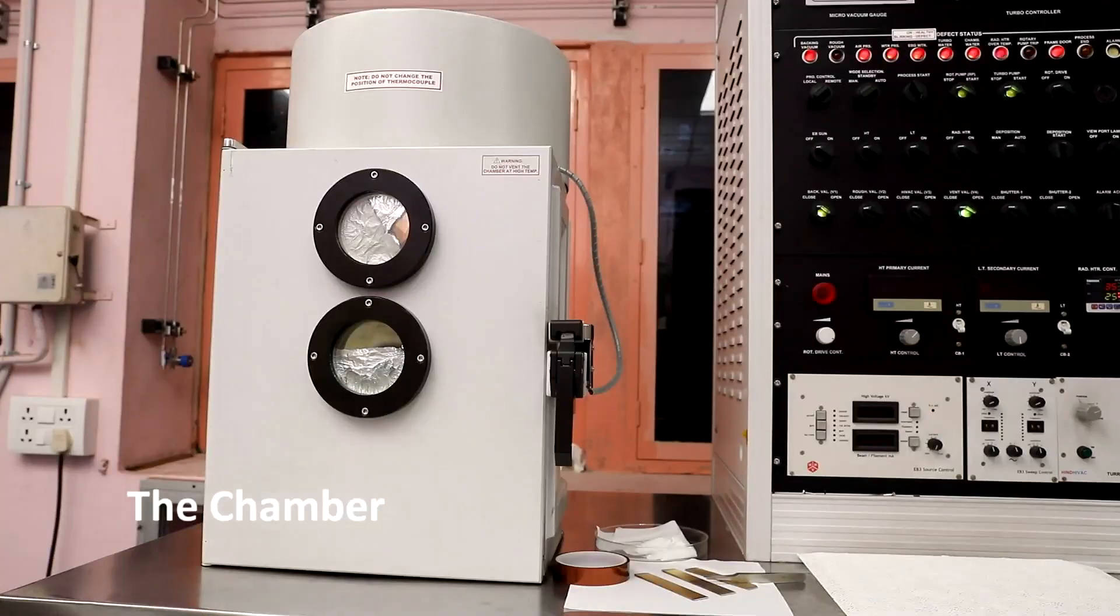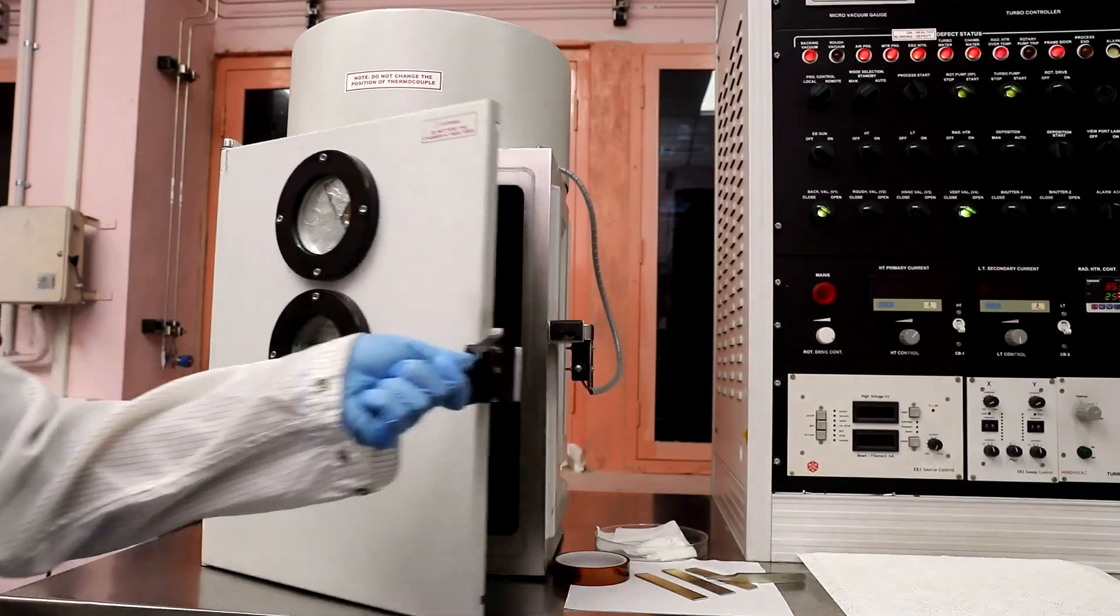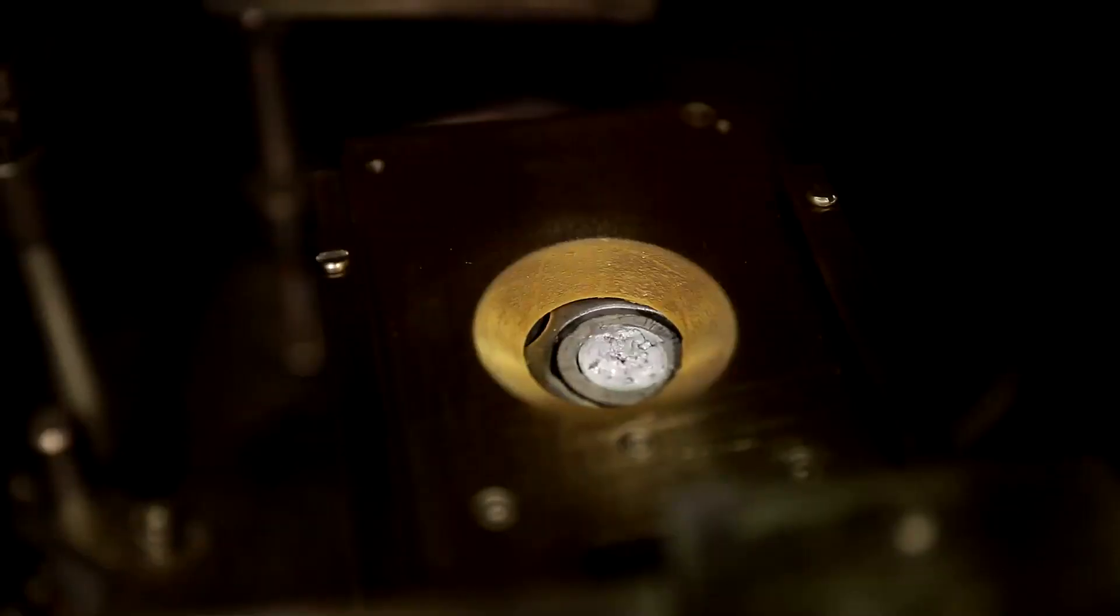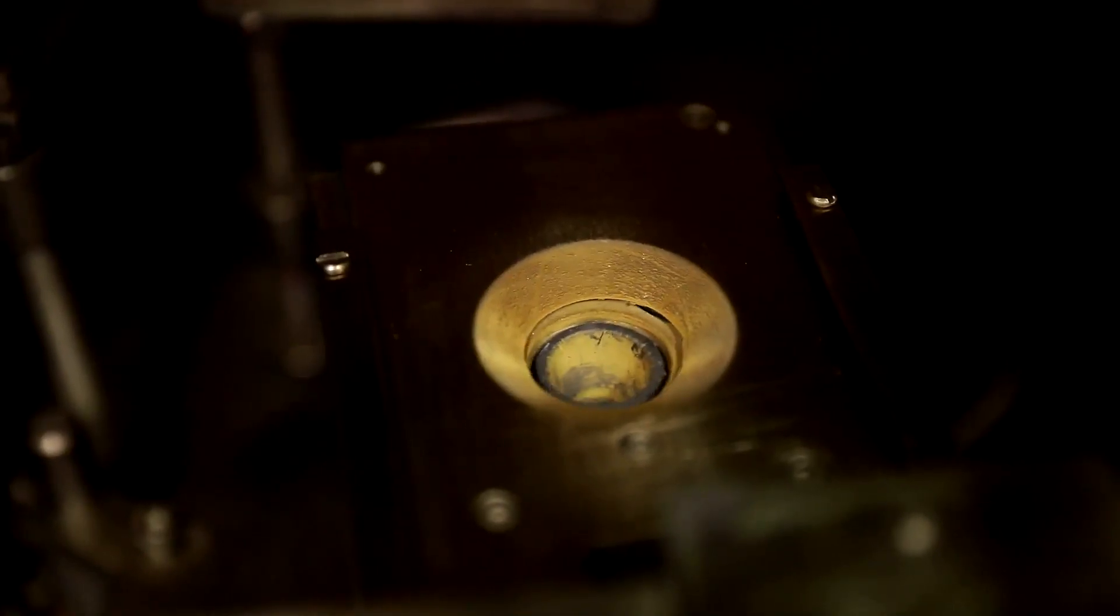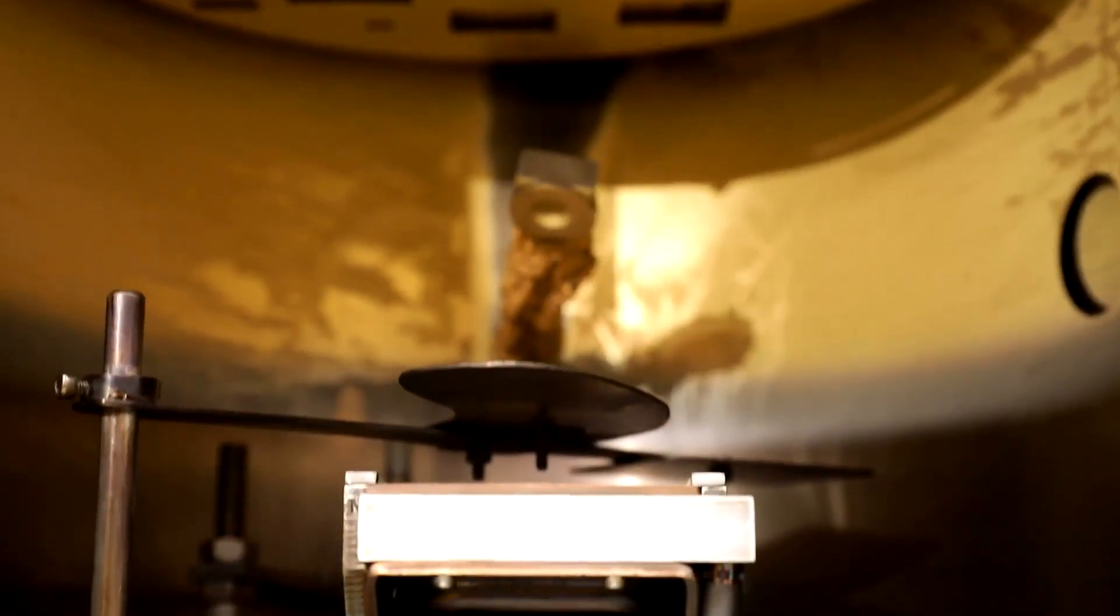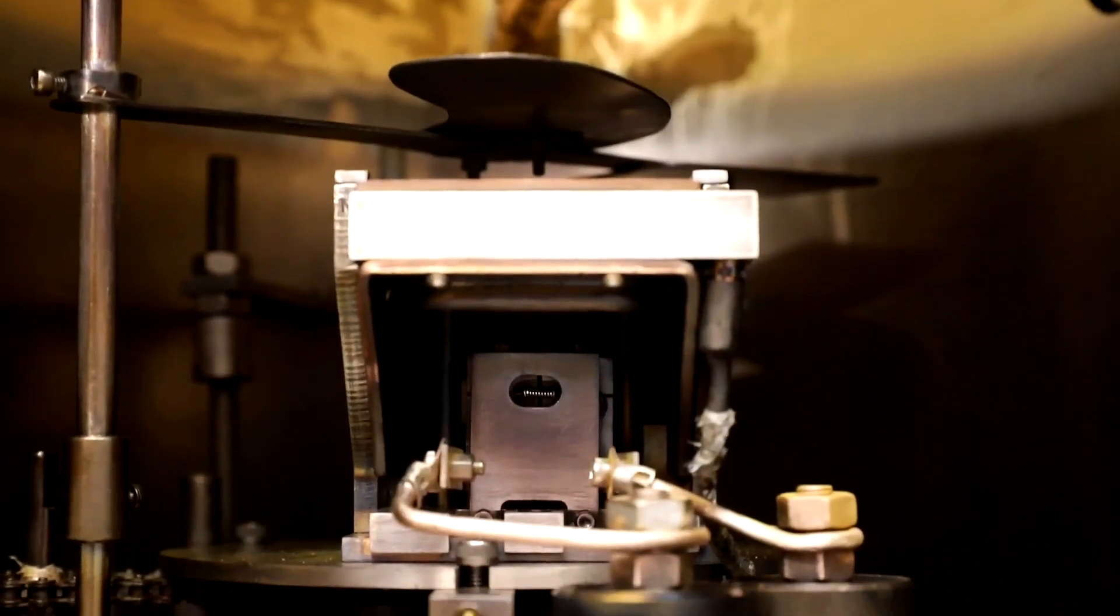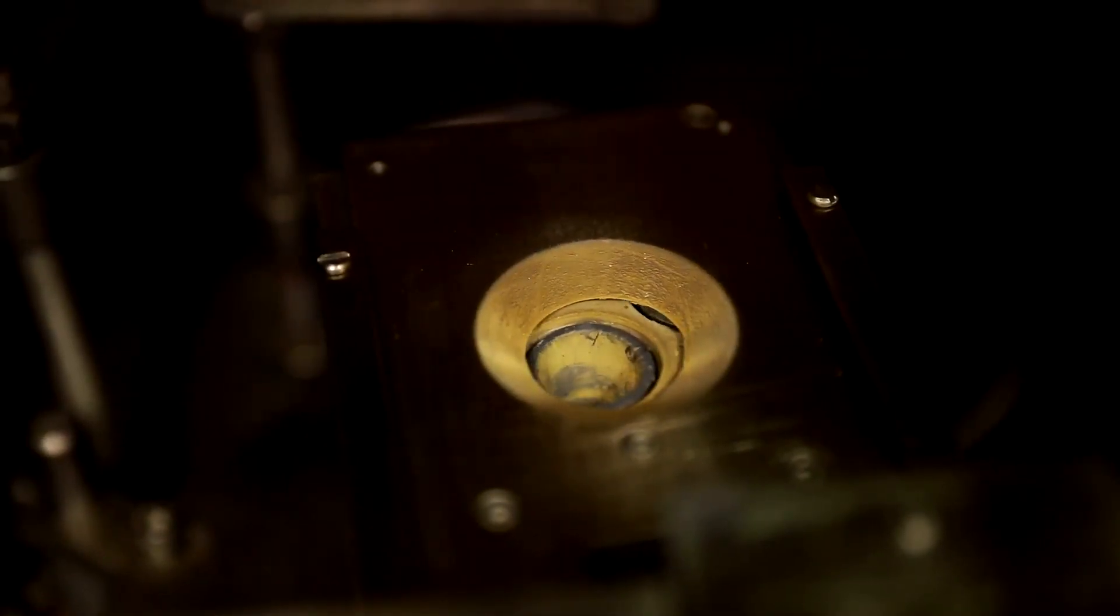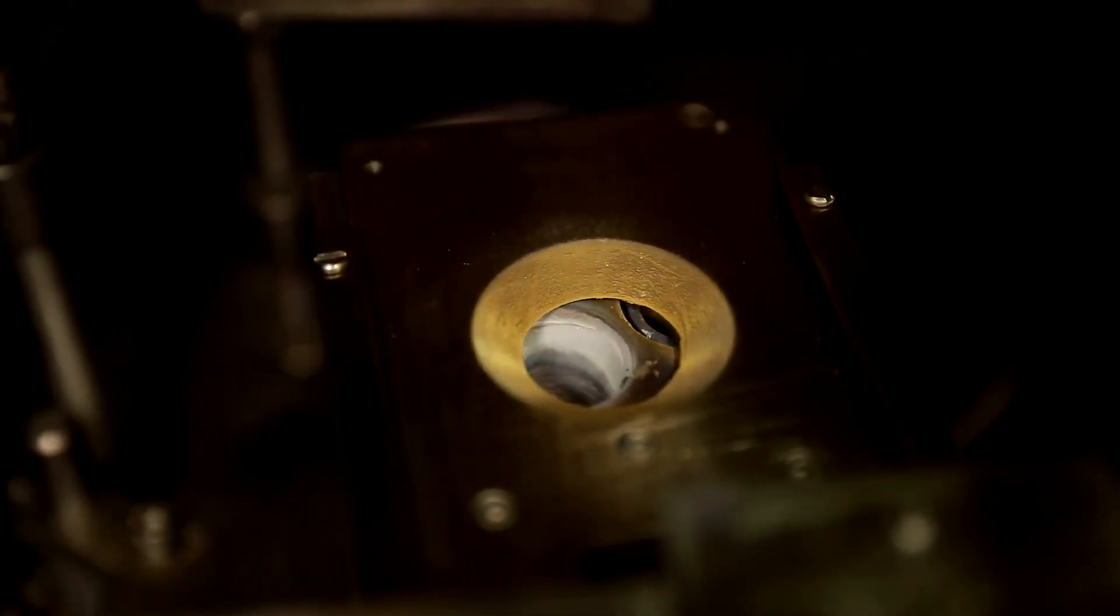About the chamber. Here we can see the chamber for vacuum deposition of metals or other materials. In the present case we are going to deposit chromium. The chamber consists of two main sections: an electron source which is here, and a crucible section that holds the material we want to deposit.